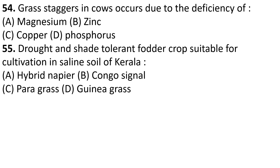Grass staggers in cows occurs due to the deficiency of magnesium — magnesia deficiency.